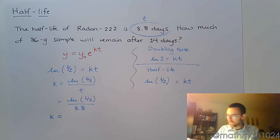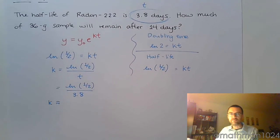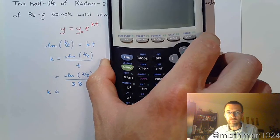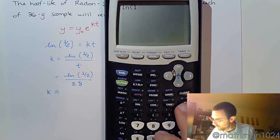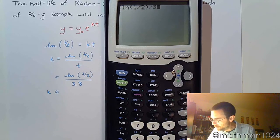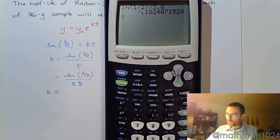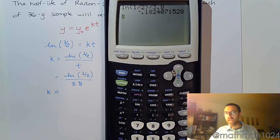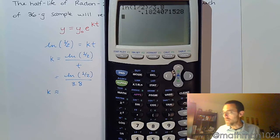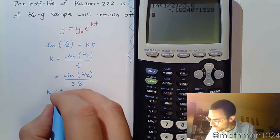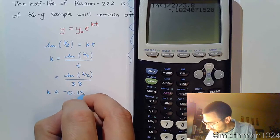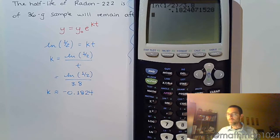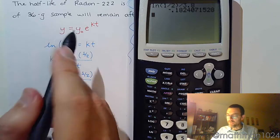So k is approximately, let's see, we get the natural log of 1/2 divided by 3.8. So we end up with a negative rate, which makes sense because we are losing stuff. That radioactive decay, you break down, you're losing. So we have a negative rate, not a growth, not a positive number, but negative. So this is approximately negative 0.1824.